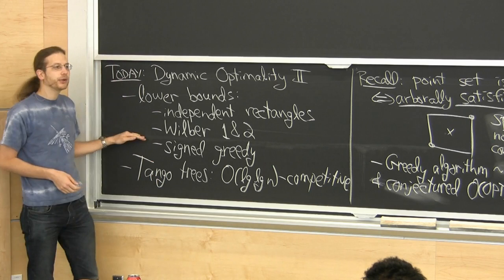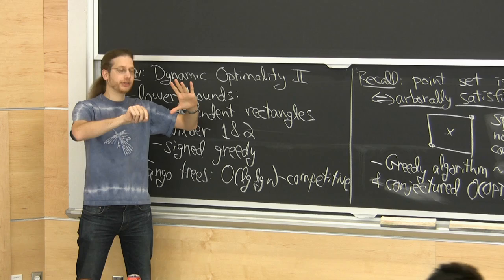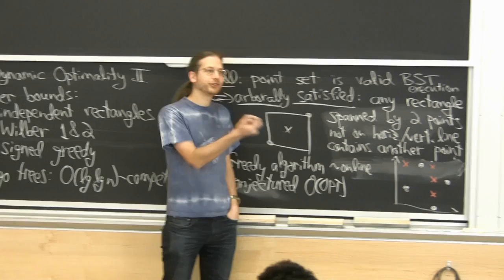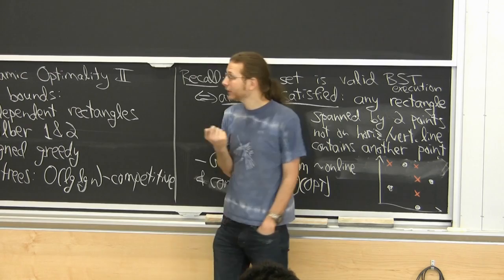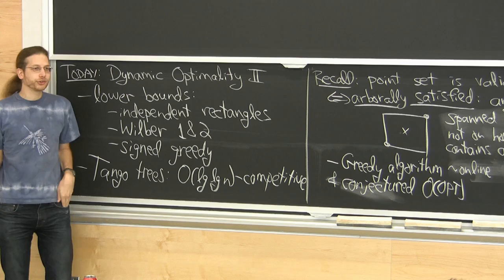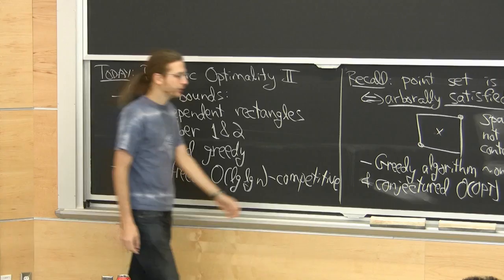Another consequence of the lower bounds: there's a particular sense in which log n is necessary for some access sequences. Previously I argued that for every binary search tree there is an access sequence forcing log n per operation. What we'll see today is that there is one access sequence such that for every binary search tree, you need log n time — just changing the quantifiers around.